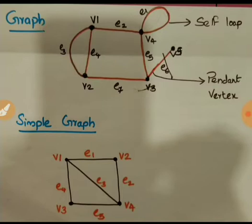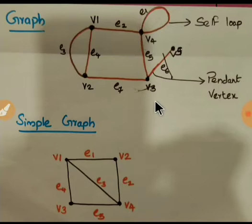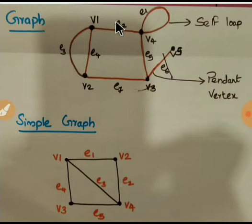Each edge EK is identified with an ordered pair of vertices, that is VI, VJ. In the graph you can see certain vertices like V1, V2, V3, V4 etc. These are vertices, and edges E4, E7, E3, E2, E5 etc. — these are the certain edges.